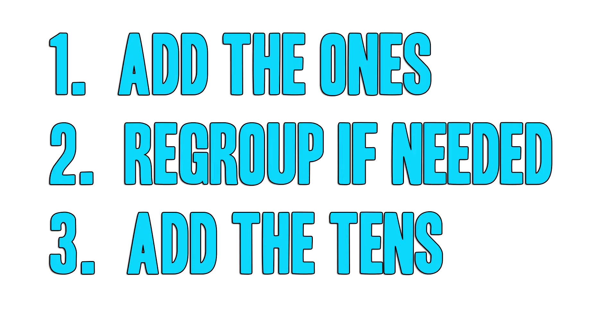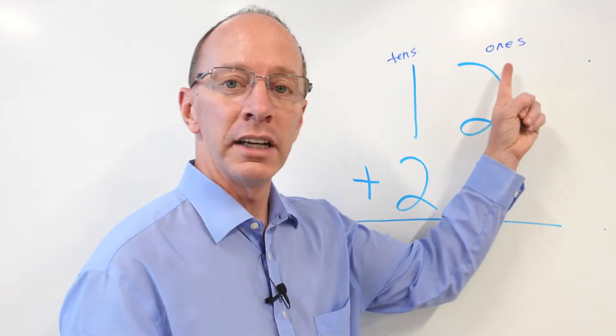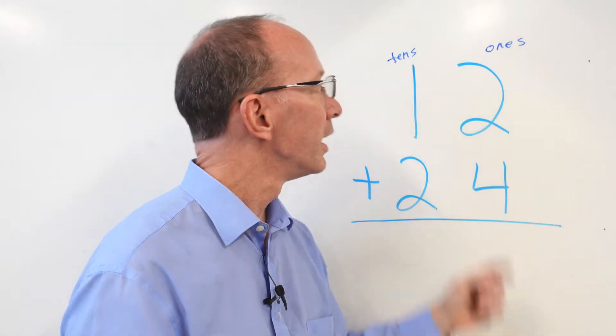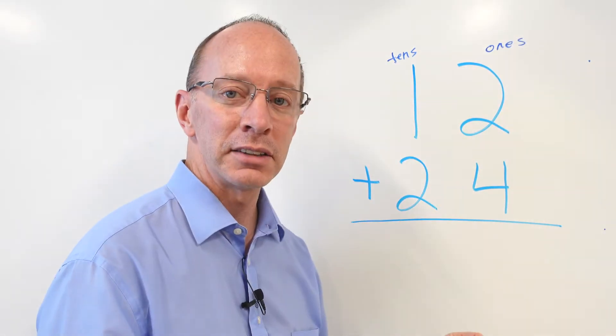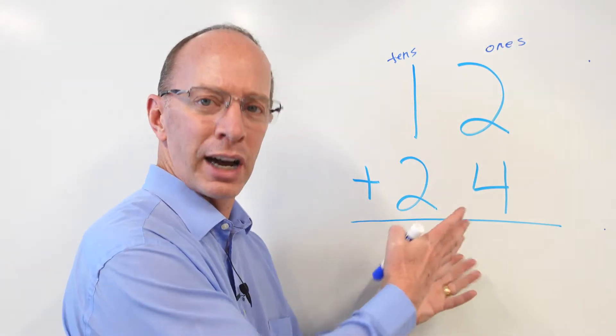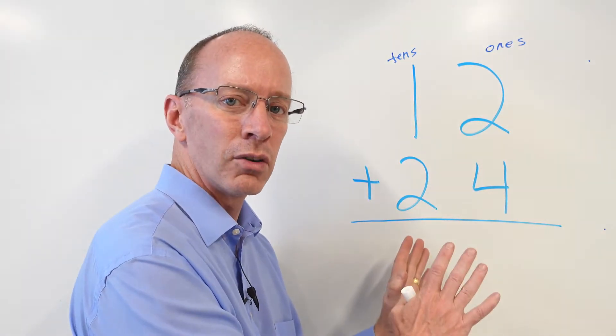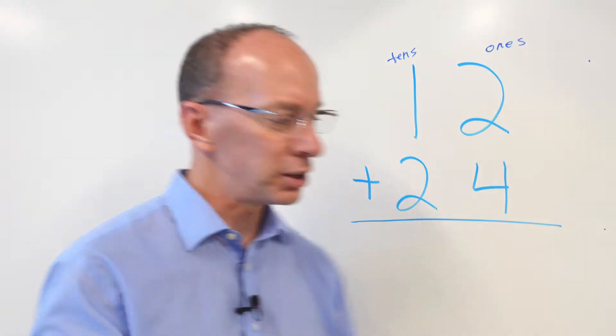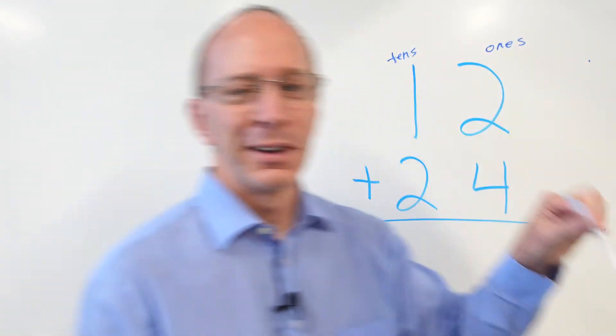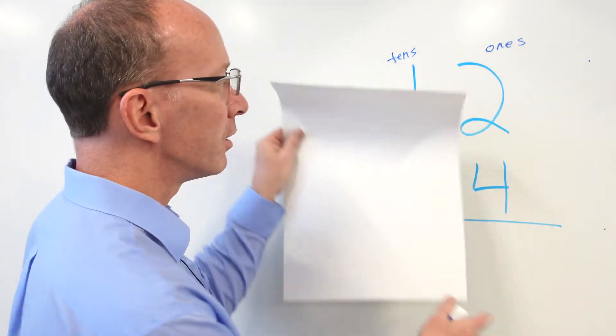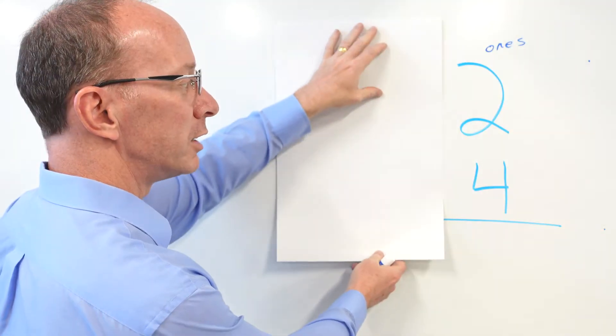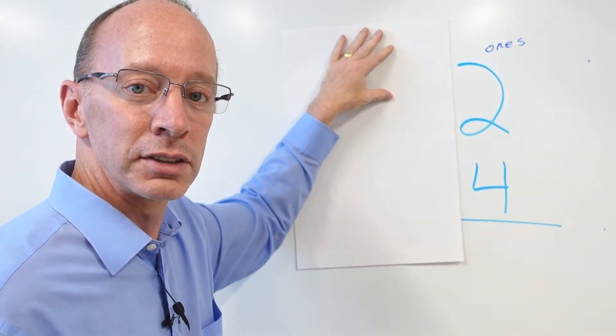Our first rule is add the ones. This is the ones place right here, and this is the tens place. Now, when you're looking at a problem like this, it gets a little overwhelming. So what I like to do is get a piece of paper right here, and I'll cover this up because we are going to be adding the ones first.